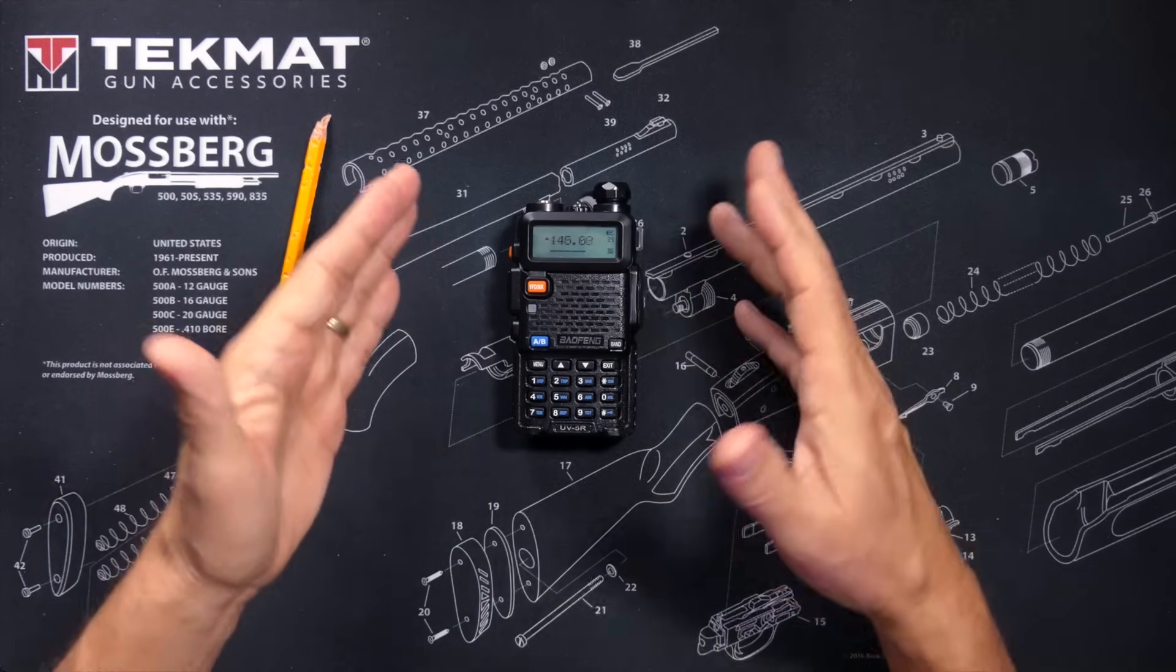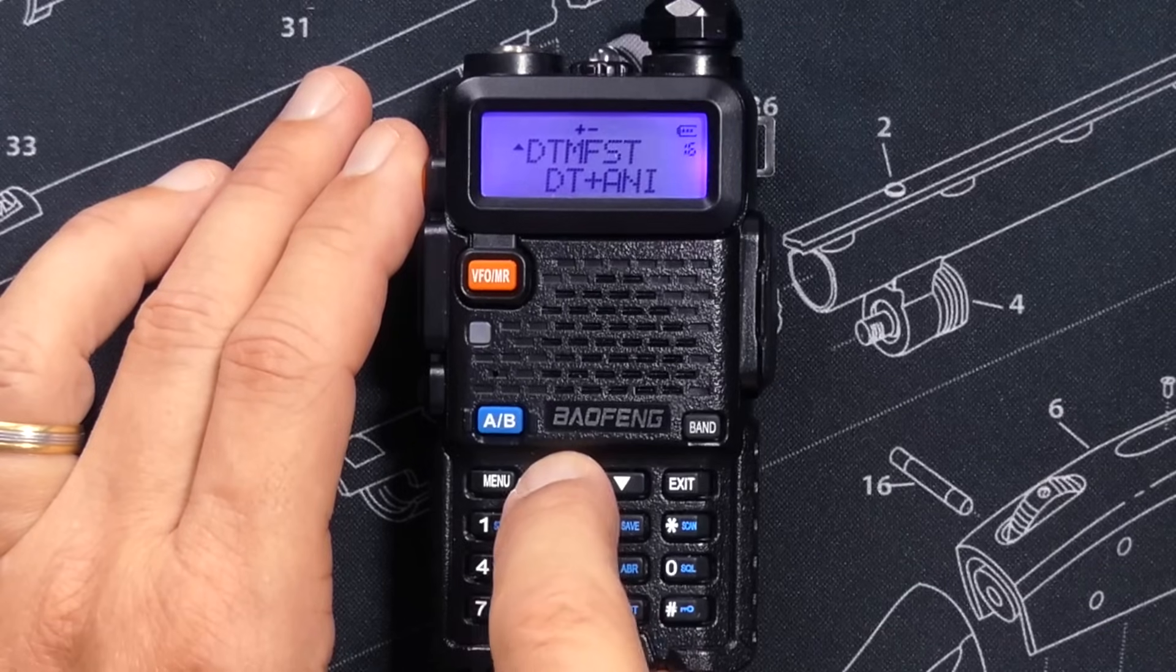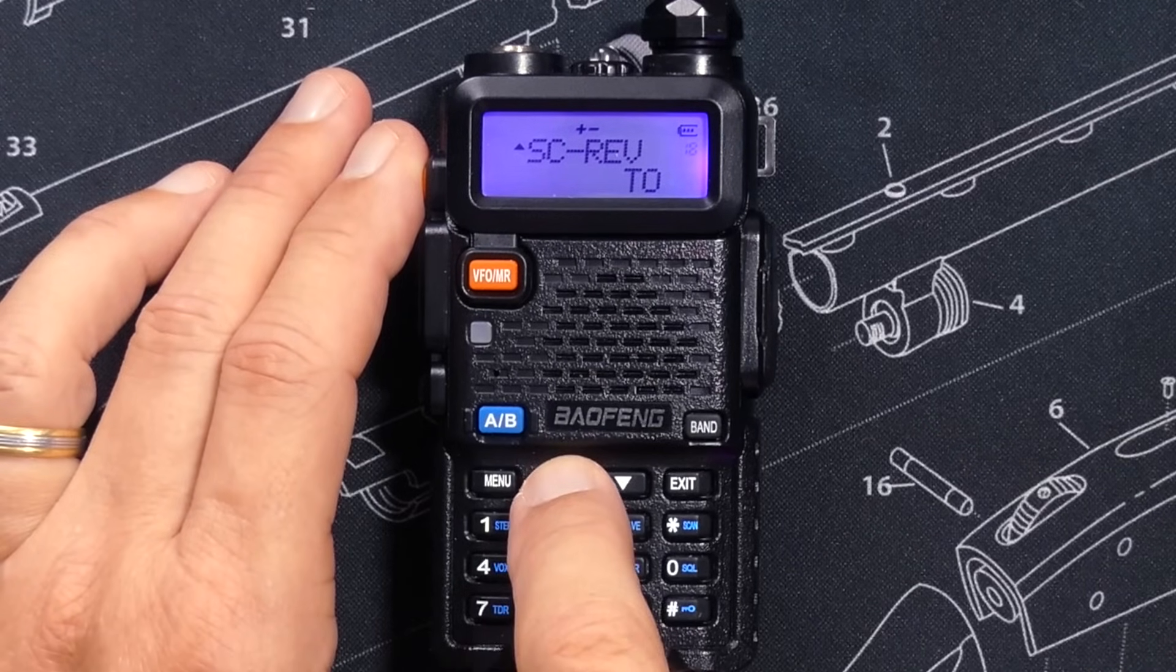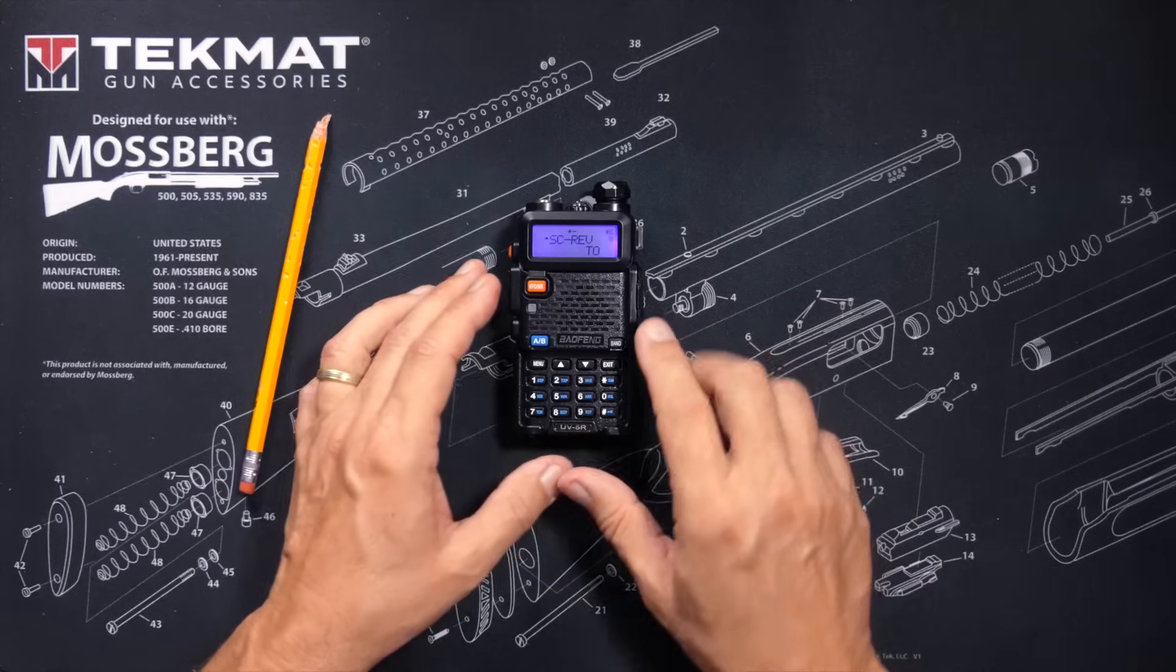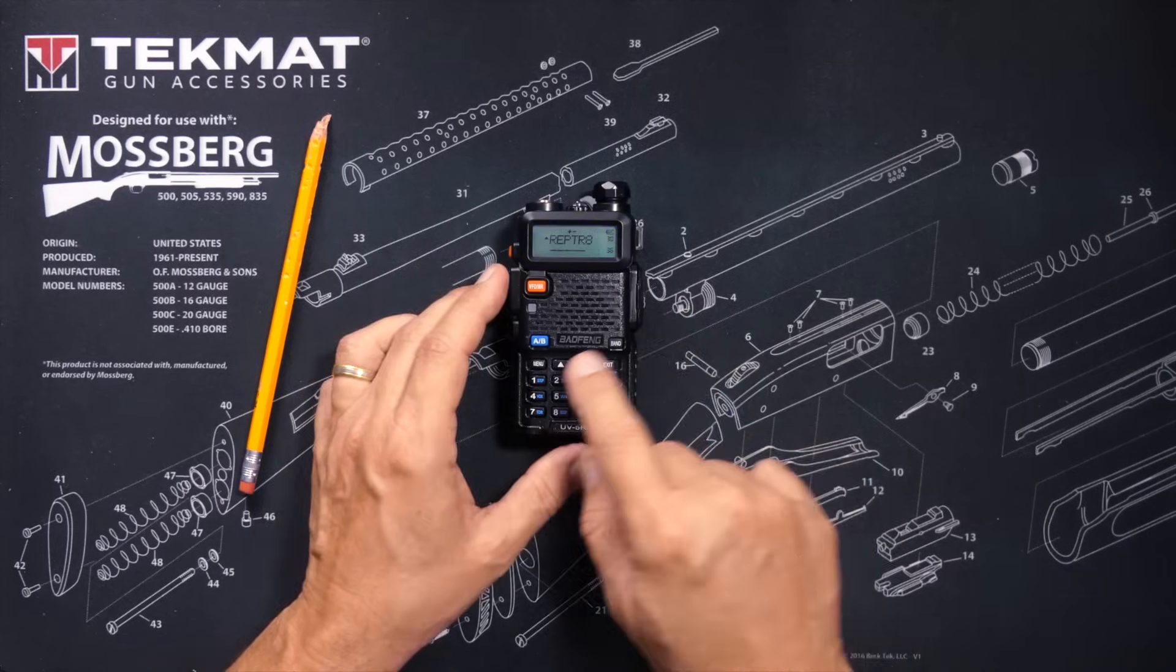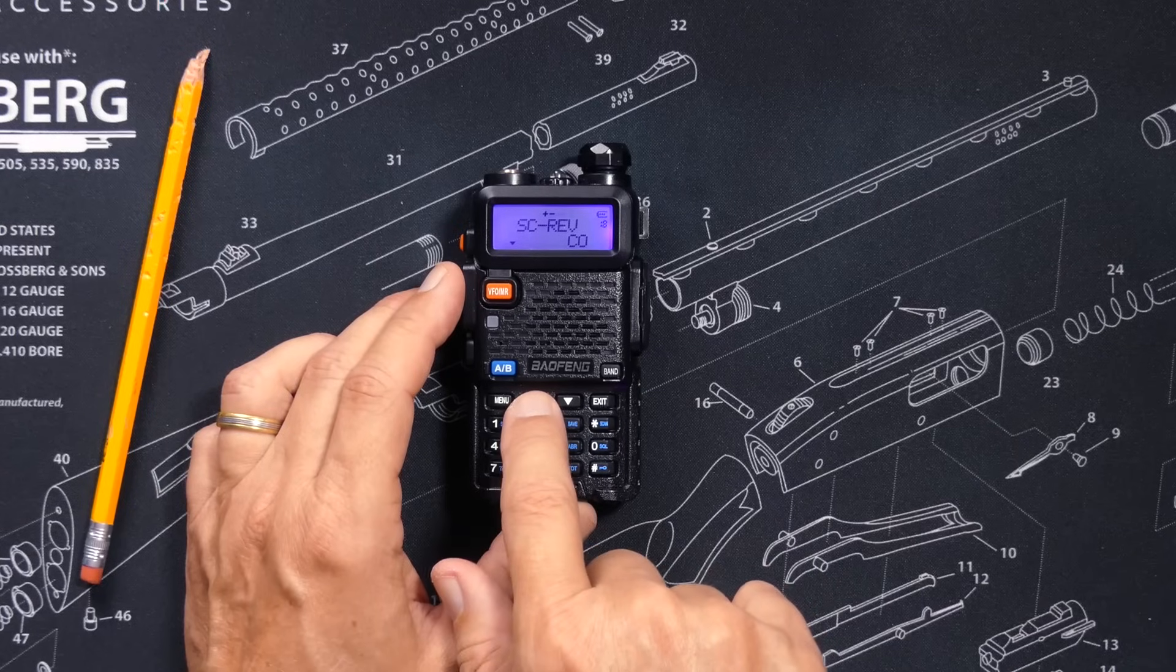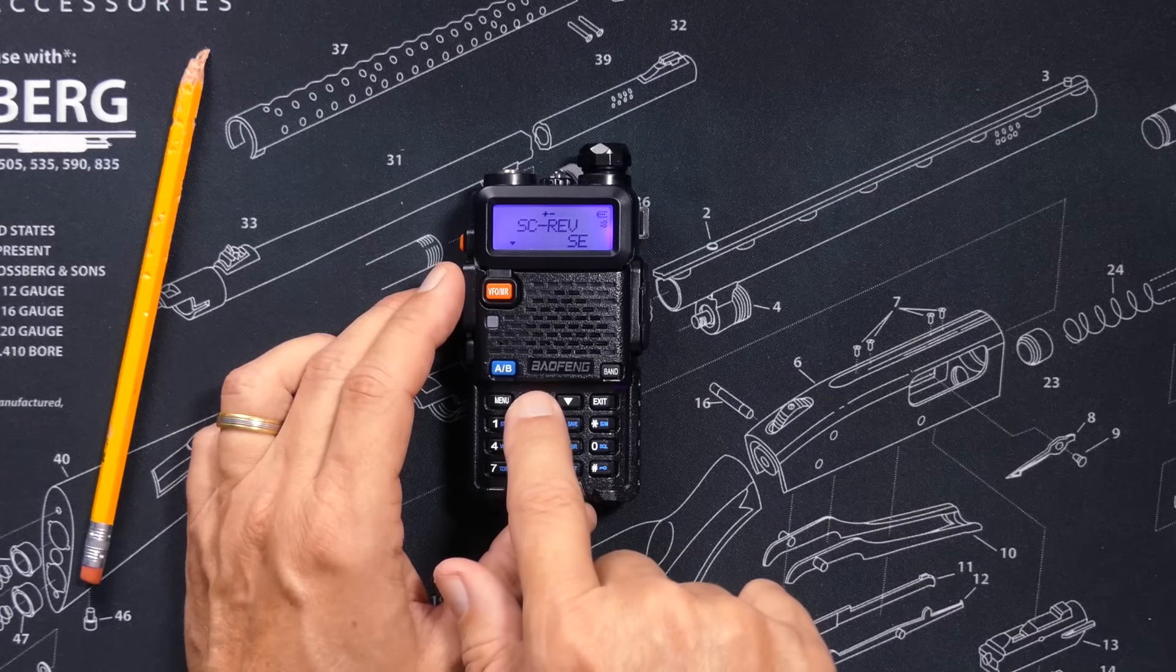And what happens next depends upon your SCREV settings in menu item number 18. The SCREV setting has three options: TO, CO, and SE.